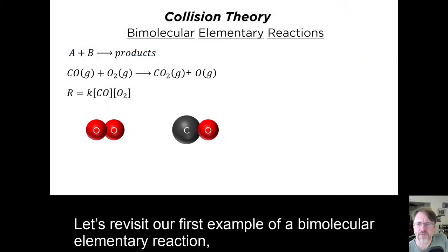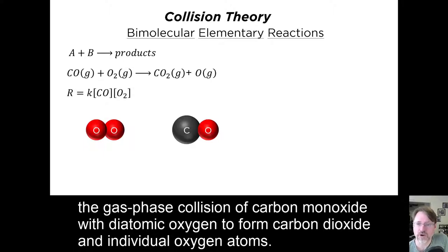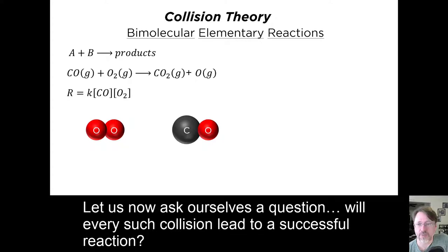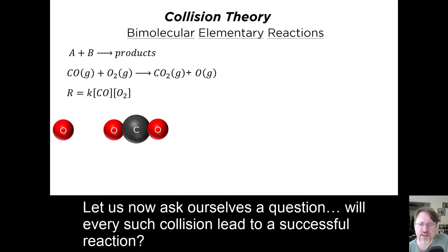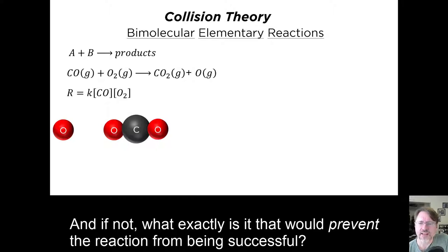Let's revisit our first example of a bimolecular elementary reaction, the gas phase collision of carbon monoxide with diatomic oxygen to form carbon dioxide and individual oxygen atoms. Let us now ask ourselves a question. Will every such collision lead to a successful reaction? And if not, what exactly is it that would prevent the reaction from being successful?